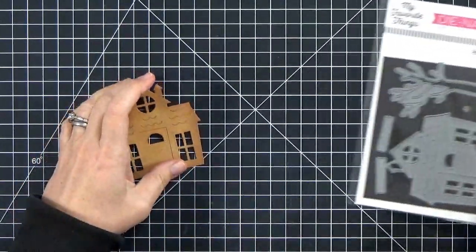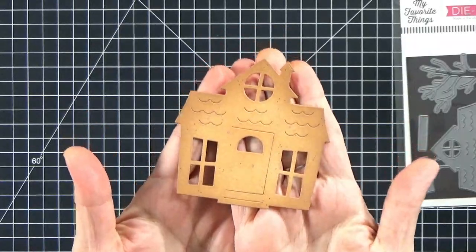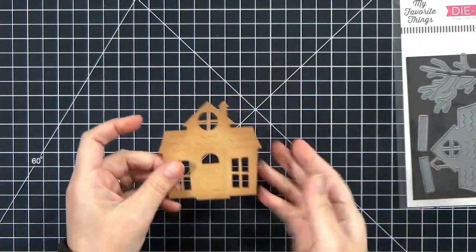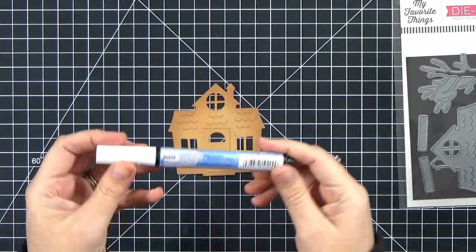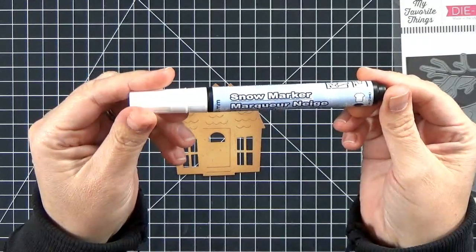I have cut out the haunted house die from My Favorite Things from some craft cardstock, and then I've ink blended it. You can check out my previous quick tip video to see how I did that to get all the colors there.